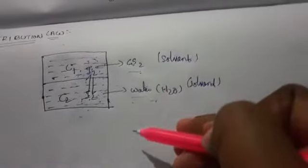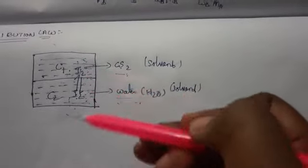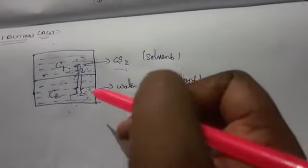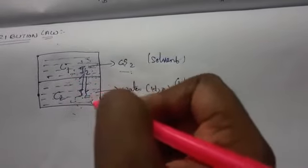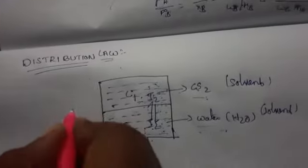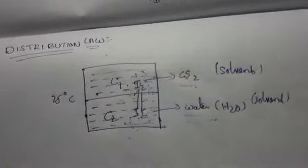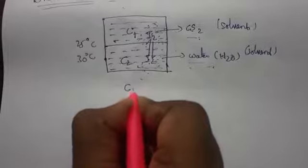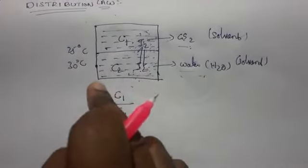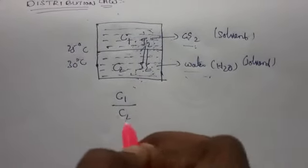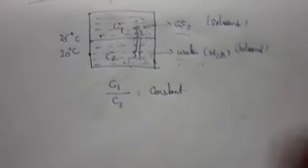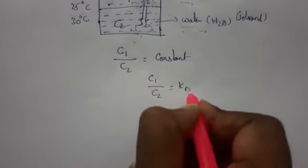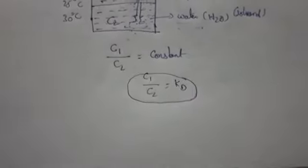Iodine distributes itself between the two layers. On adding iodine, the ratio of concentrations remains constant at a given temperature — whether at 25°C or 30°C, the ratio remains constant. The ratio c₁/c₂ — the concentration of iodine in CS₂ to the concentration of iodine in water — is constant. This constant is called Kd, the distribution coefficient or partition coefficient. This relation is called the distribution law.